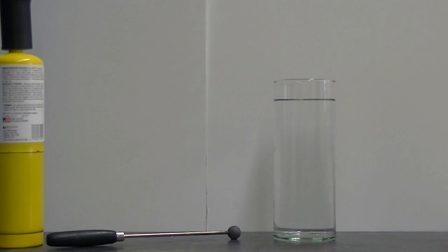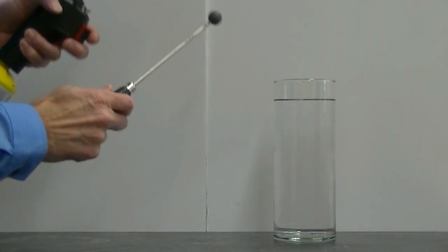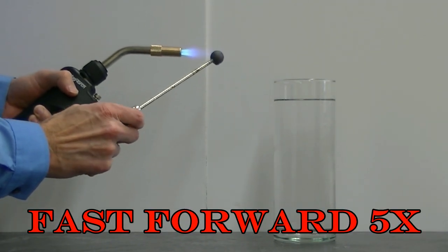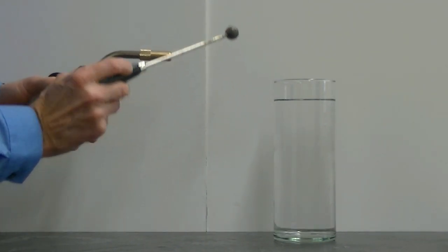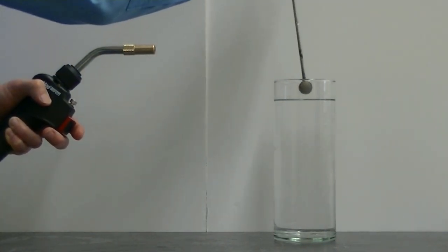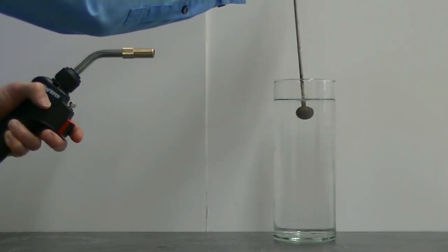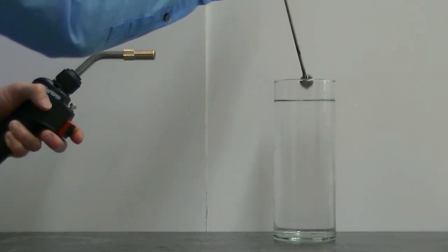To start learning about the Leidenfrost effect, let's heat this steel sphere for a short period of time and then place it in some water. In this case, the water quickly cools the sphere back to room temperature.